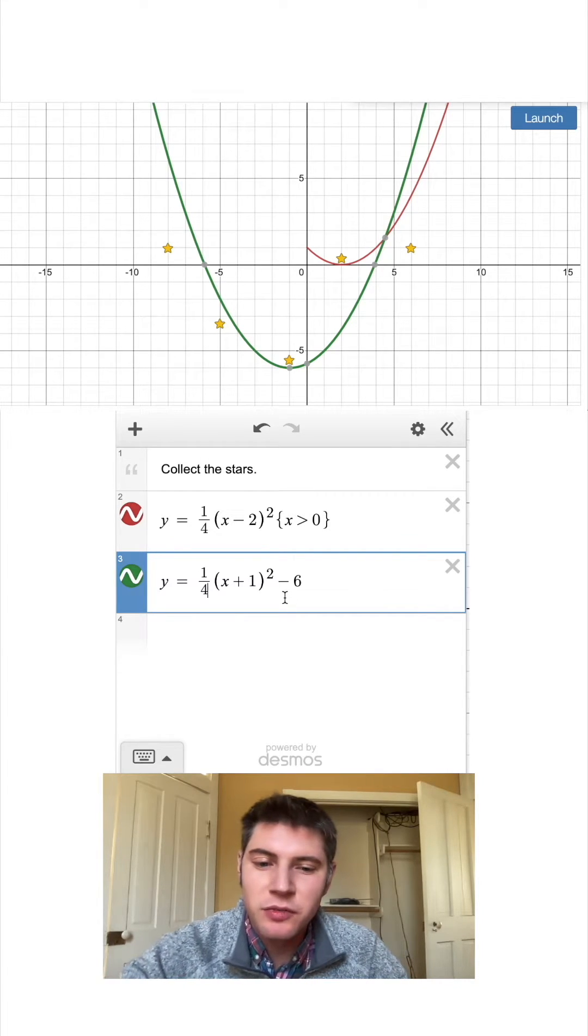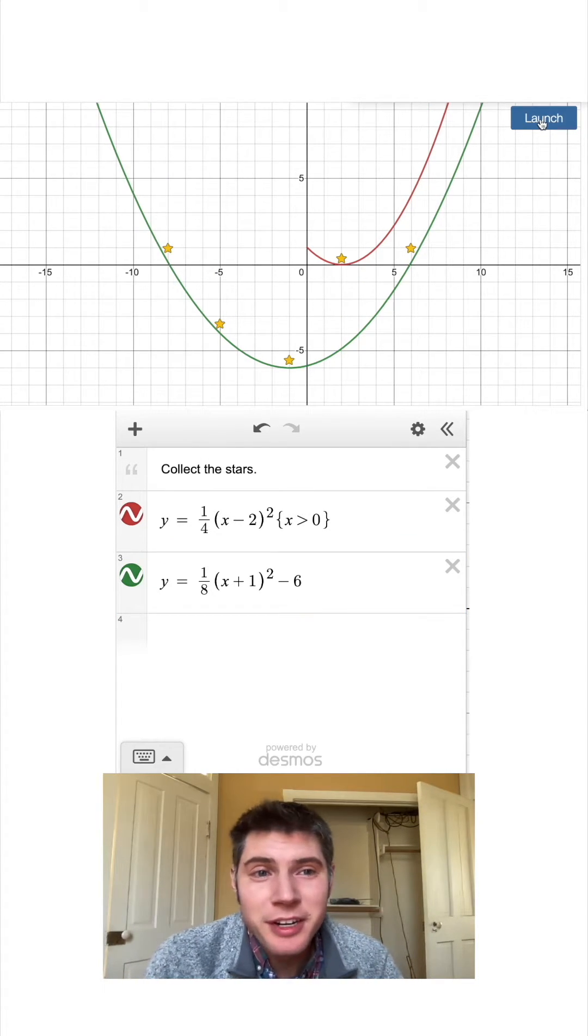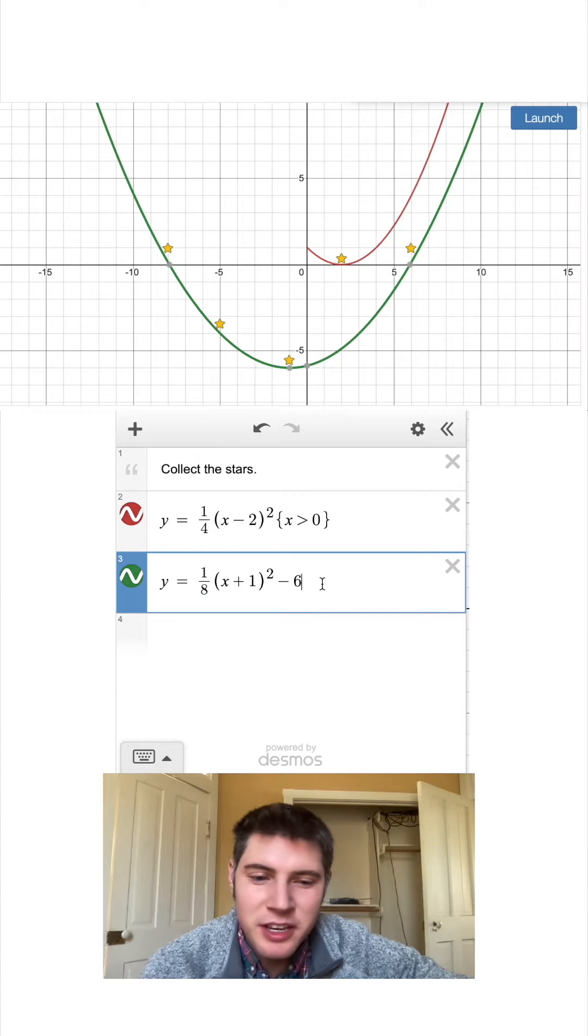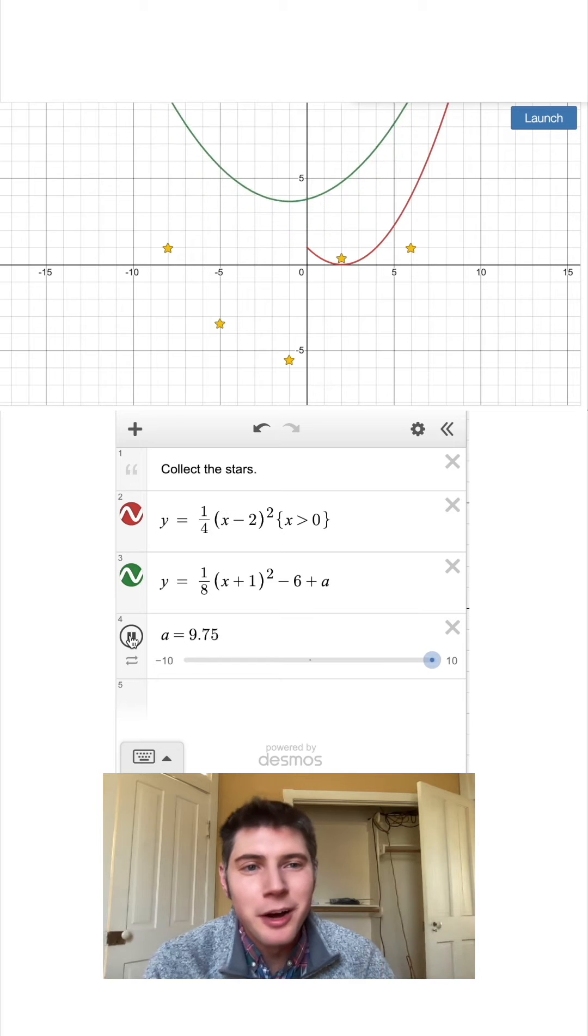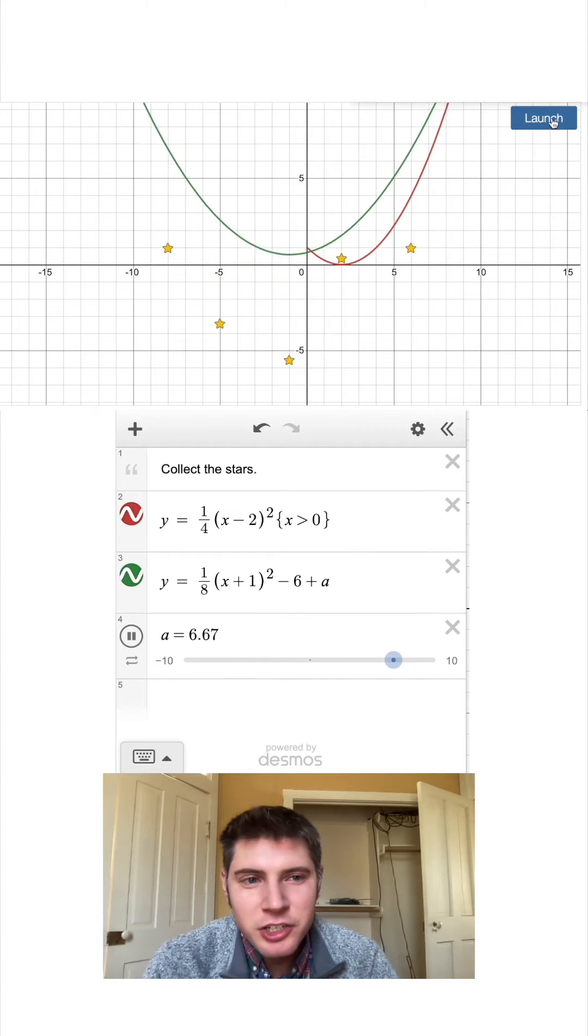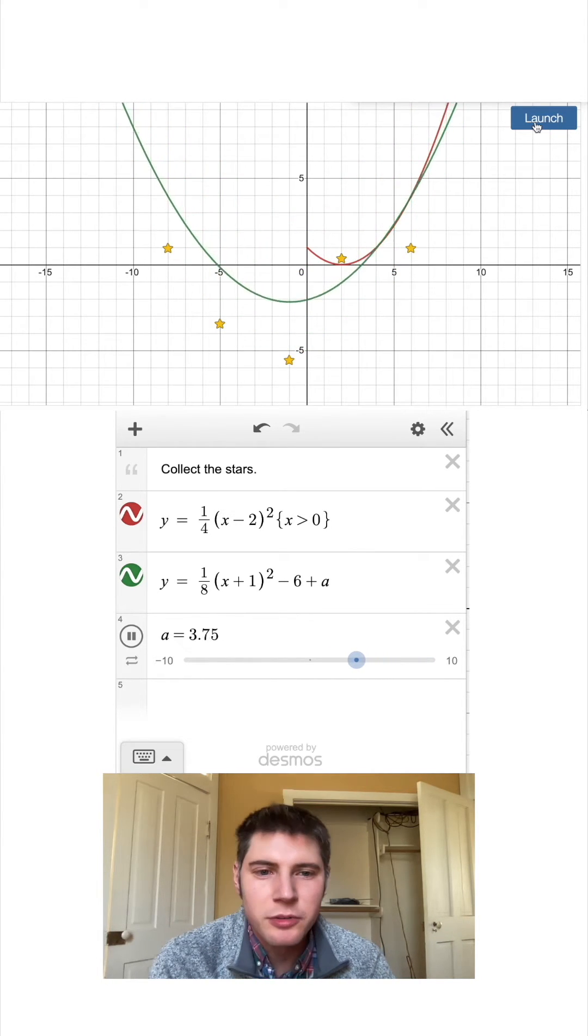Let's make it twice as wide. Let's make this four and eight. This will probably solve it right here. If we want to make it more interesting, we could say plus a. Now we can add a slider a, and then we can hit play on this slider and we'll move it up and down. And then if I hit launch right at the correct moment, right here.